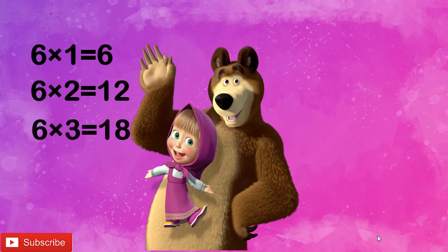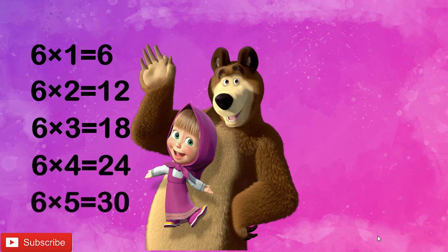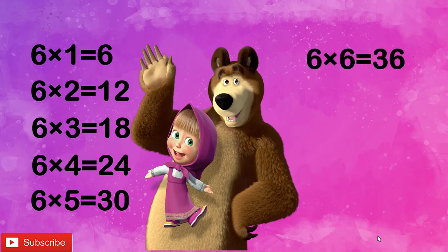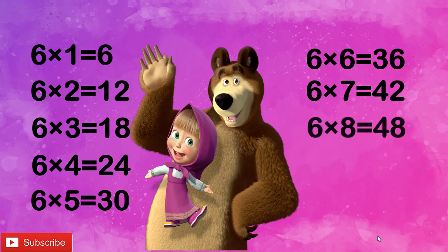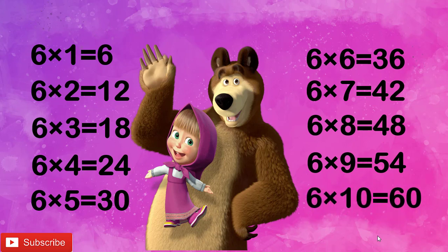Now let's revise once children. 6 1's are 6, 6 2's are 12, 6 3's are 18, 6 4's are 24, 6 5's are 30, 6 6's are 36, 6 7's are 42, 6 8's are 48, 6 9's are 54, 6 10's are 60.